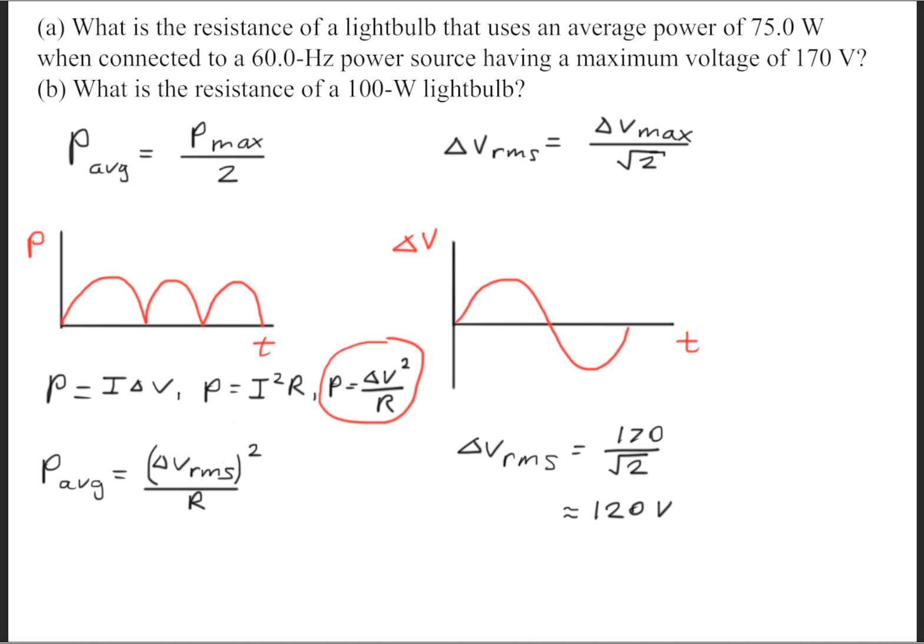The most useful one for this question will be the third one right here. Since we now have the average versions for the power and the voltage, we can go ahead and plug them into the power formula. And we'll find that we'll get a resistance of 193 ohms.